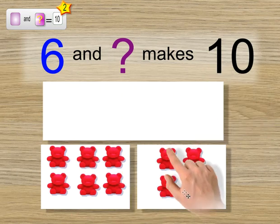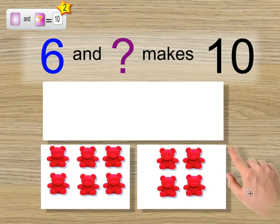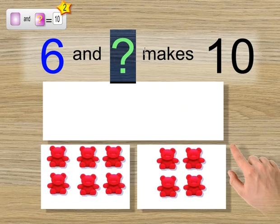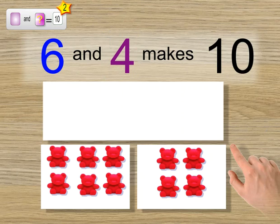6, 7, 8, 9, 10. So the part that is missing is 4. Now it's your turn.